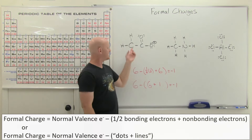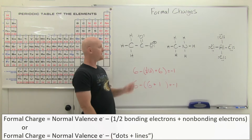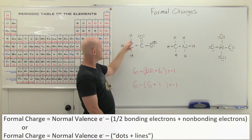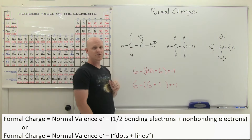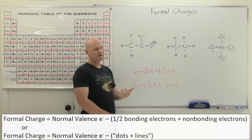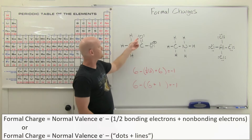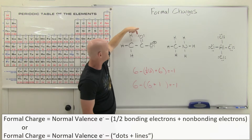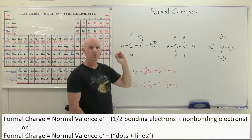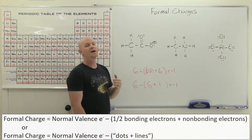For carbon: four minus four lines and no dots — four minus four is zero. For the other oxygen: six minus two lines and four dots — that's six total — and six minus six is also zero. It's a very quick and easy formula to remember for calculating formal charge.